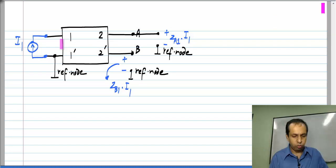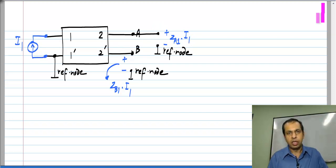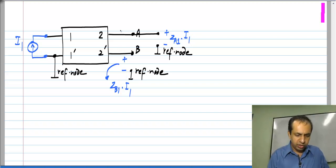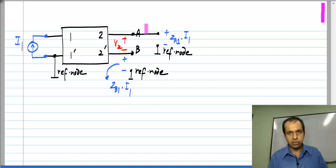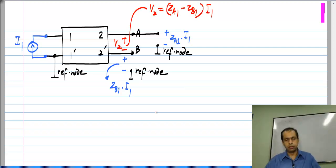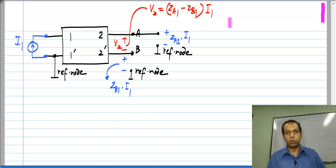I calculate the voltages at port A and port B by first considering ports 1 and A together, then ports 1 and B together. When I apply I1, I get some voltage at A and some voltage at B, expressed in terms of two-port parameters. My actual second-port voltage V2 is found using KVL around the loop: V2 equals ZA1 minus ZB1 times I1. So I have applied a current at port 1 and found the voltage at port 2.